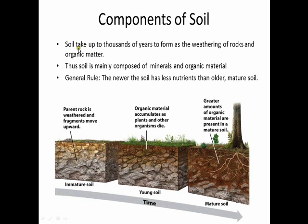The components of soil. Soil takes up to thousands of years to form by the weathering of rocks, which produces minerals and organic matter. Soil is mainly composed of minerals and organic matter. The general rule is that newer soil has less nutrients than older soil. New soil is very limited and has very little nutrients, and as it grows older it covers more area.